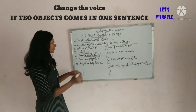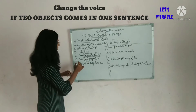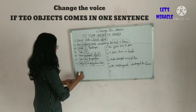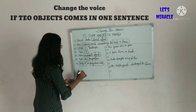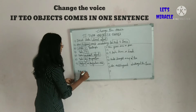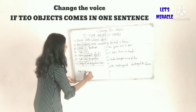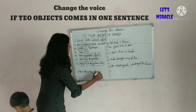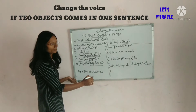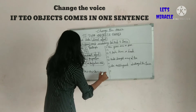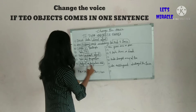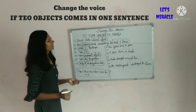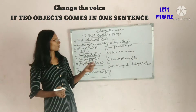Then take the indirect object. Take 'by' as a preposition and the subjective case of the subject. So the formula is: direct object + helping verb (according to subject and tense) + V3 + to + indirect object + by + subjective case of the subject. This is the formula for changing voice when there are two objects. Let's see some examples.